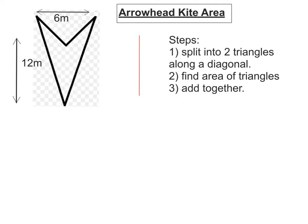In this video, we're going to work out the area of this arrowhead kite. The first thing we must do is split it into two triangles along a diagonal.